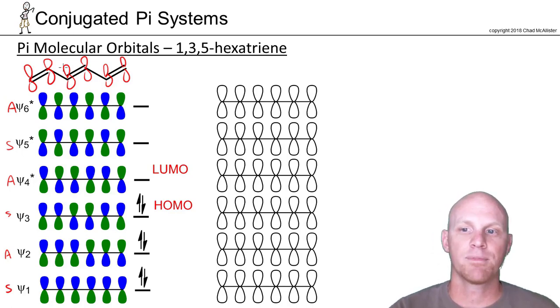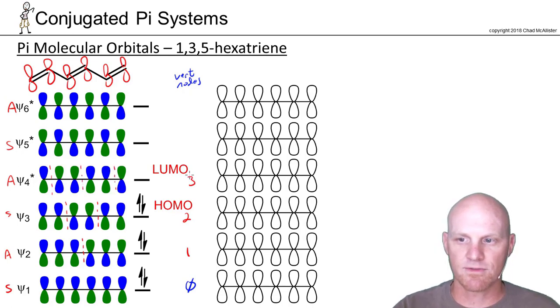If we start counting up the number of vertical nodes as well, in psi 1, there's zero. In psi 2, we've got 1. In psi 3, we've got two vertical nodes. In psi 4, we've got three vertical nodes.